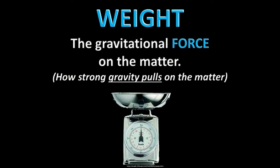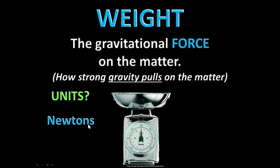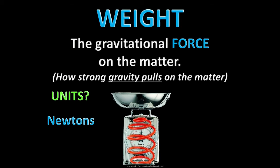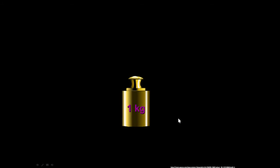Weight is how much force gravity puts on that matter — how strong the gravitational pull is on that matter. A scale like this, even though it says kilograms, is really not measuring mass. It's measuring force, and force is measured in newtons. The reason is that there's an internal spring. Anytime a scale has an internal spring, it's measuring the force of gravity — the weight of the object — because that spring gets compressed due to the weight of the thing in the pan.